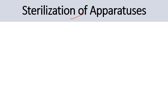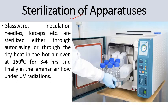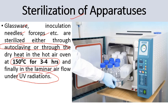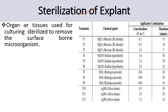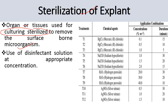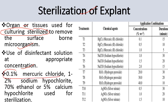Next comes sterilization of apparatuses. Glassware, inoculation needles, and forceps are sterilized either through autoclaving or through dry heat in a hot air oven at 150 degrees Celsius for three to four hours, and finally in the laminar airflow under UV radiation. Next comes sterilization of explants — the plant material or fungal material used for multiplication in culture media. Organs or tissues are sterilized to remove surface-borne microorganisms using disinfectant solutions: 0.1% mercury chloride, 1 to 2% sodium hypochlorite, 70% ethanol, and 5% calcium hypochlorite.